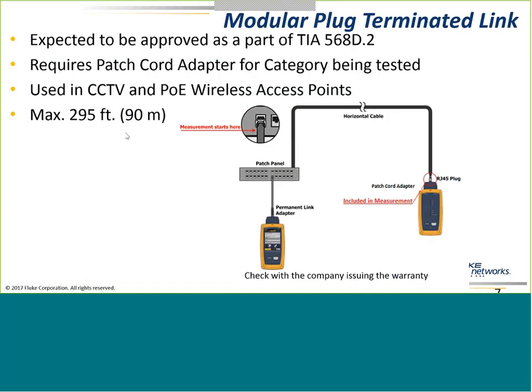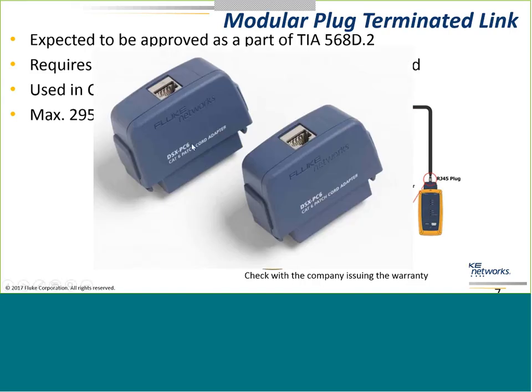We've seen the writing on the wall that in the next revision of the ANSI/TIA-568 standard, they're going to incorporate this modular plug terminated link. We'll have a permanent link adapter on one end. On the far side, something special — we're not going to use a regular channel adapter, we're going to use a patch cord adapter. If we used a channel adapter, we would not include the mated NEXT from this connection. In order to include the mated NEXT and measure the termination of the plug, we're going to use the special patch cord adapters.